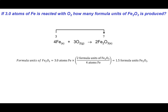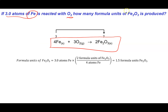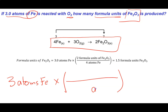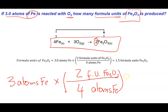Let's look at another example. Given a balanced equation, three atoms of iron are reacted with O2 to make Fe2O3. The question is how many formula units of Fe2O3 can I make? With three atoms of iron, I multiply by the conversion factor that has atoms of iron on the bottom. According to the balanced equation, I get two formula units of Fe2O3 for every four atoms of iron. So I can make a maximum of one and a half formula units of Fe2O3.